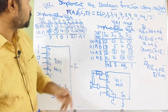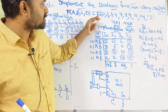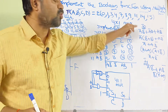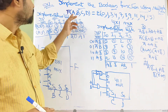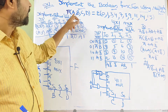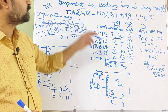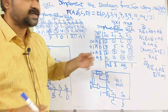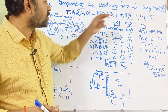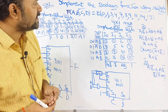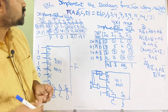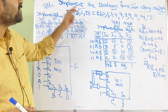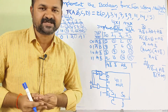Let us discuss implementing the following boolean function using 8x1 and 4x1 multiplexers. The boolean function f(a,b,c,d) = Σ(0,1,3,4,7,8,9,11,14,15), where sigma means sum of minterms. We have to implement this boolean function with the help of an 8x1 multiplexer as well as a 4x1 multiplexer.